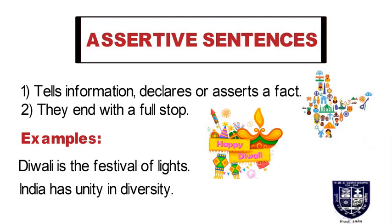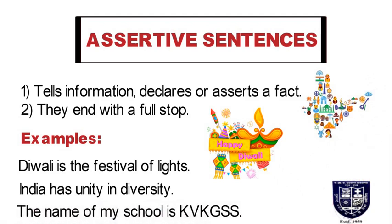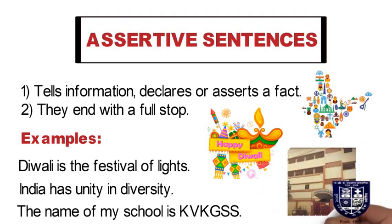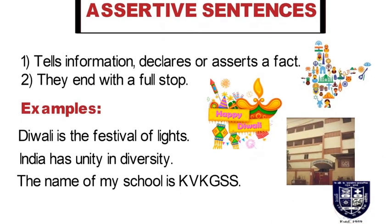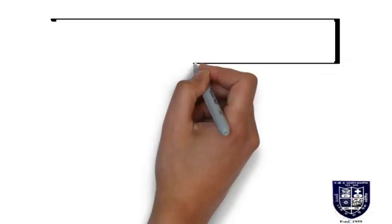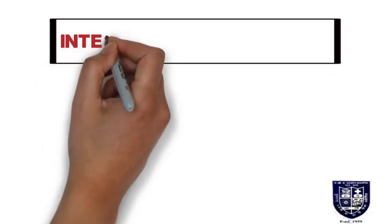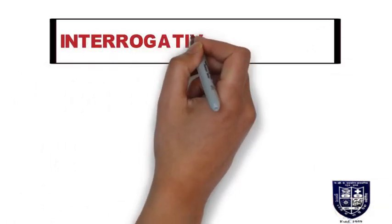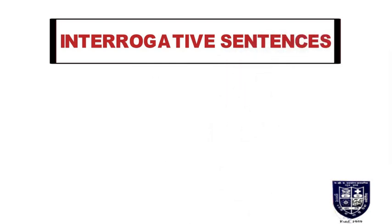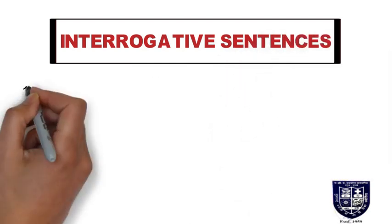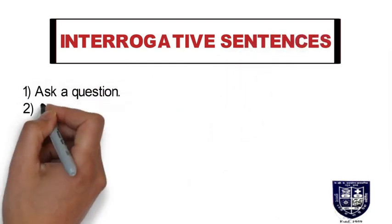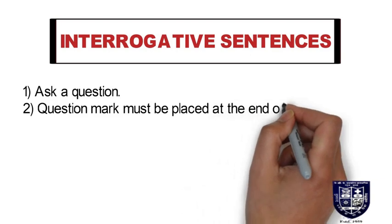Another example: 'India has unity in diversity,' wherein India has many people with different variety. And 'the name of my school is KVK GSS' — that gives us information about the school.